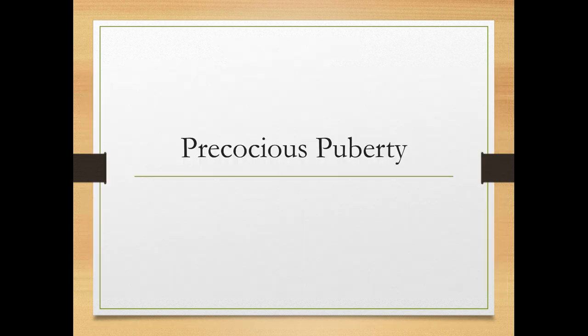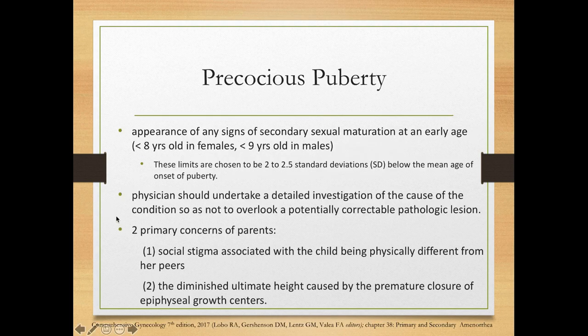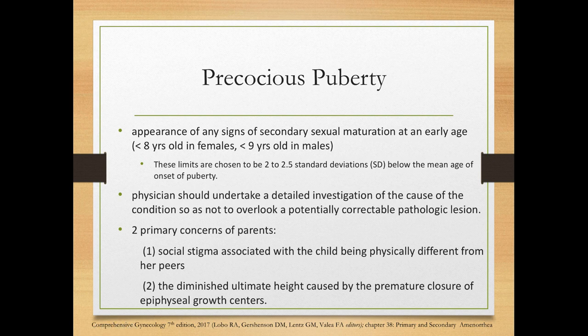Precocious puberty is the appearance of any signs of secondary sexual maturation at an early age — usually less than 8 years old in females and less than 9 years old in males. These limits are chosen to be 2 to 2.5 standard deviations below the mean age of pubertal onset. The physician should undertake detailed investigation so as not to overlook a potentially correctable pathologic lesion.